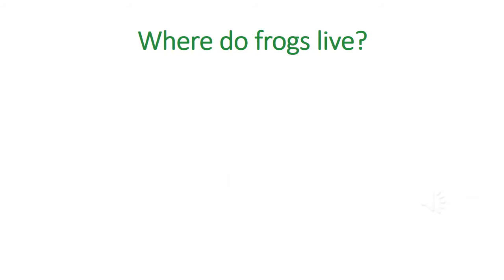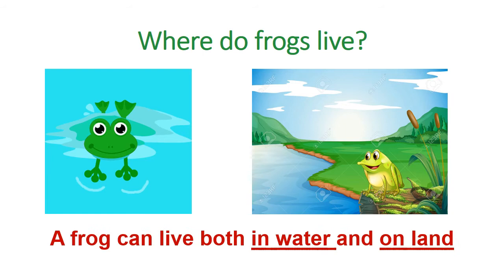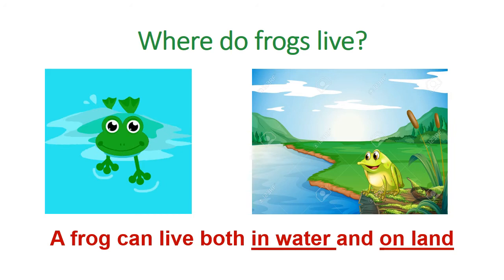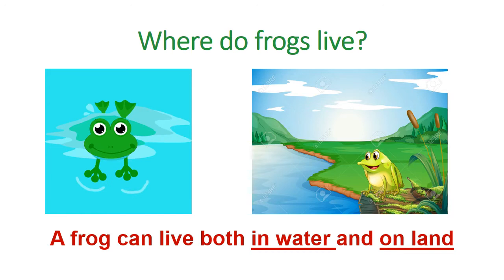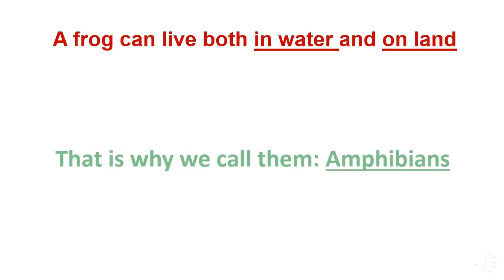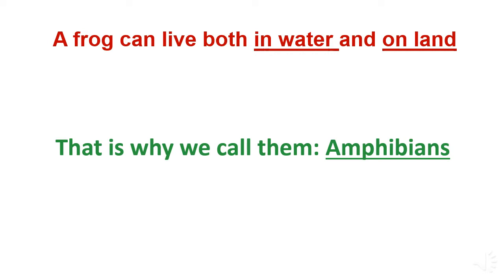So first of all, where do frogs live? We said that they live in water and on land, like in these pictures. Because they live in two places, frogs are special and different from other animals. So what do we call them? We call them amphibians. Do you know what that means? 'Amphi' means two, so because they live in two places — water and land — we call frogs amphibians.